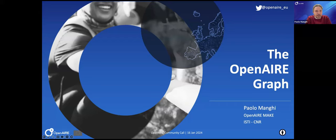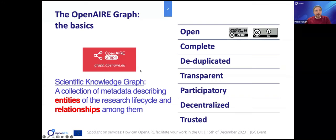Because the graph, after all, is ours as a community as a whole. There's a new term that is going on — scientific knowledge graph — and it's been there for a while, also adopted by the commission in recent calls. We don't know yet what's the right one, but SKGs is the acronym being used. And the Open AIRe Graph is just exactly one of those.